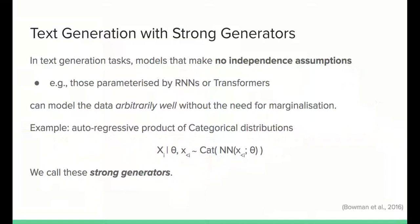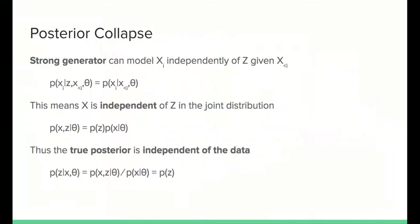Still, whereas these are our very best generators, they lack a latent space and thus cannot answer interesting posterior queries for which we may have many applications. When we combine deep LVMs and our best generators, something undesirable happens — a failure mode known as posterior collapse. Essentially, the sampling distribution, that is our strong generator, models the data by exploiting correlations purely in data space. In our autoregressive model, this means modeling the next word exclusively as a function of the observed prefix, while completely disregarding the latent variable.